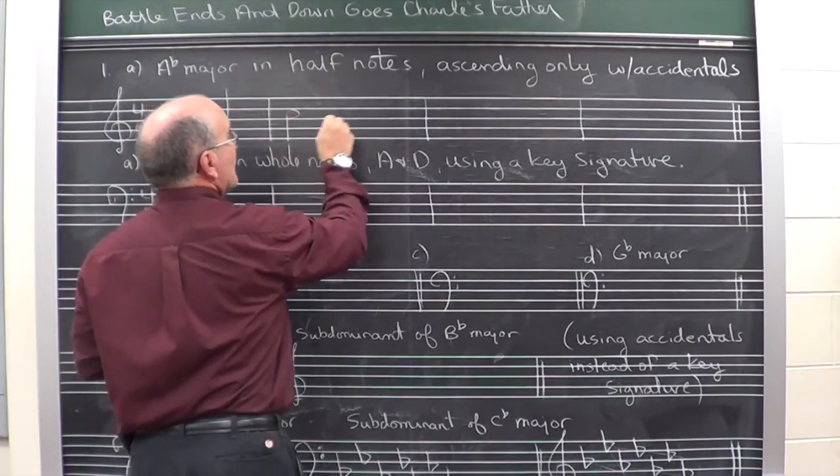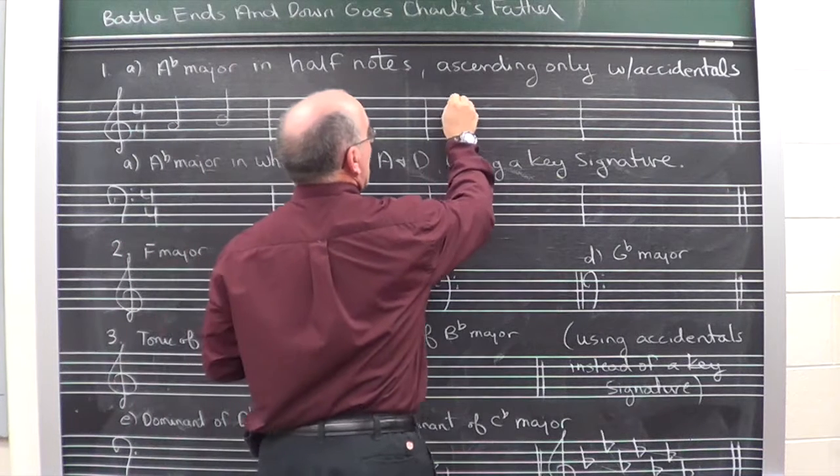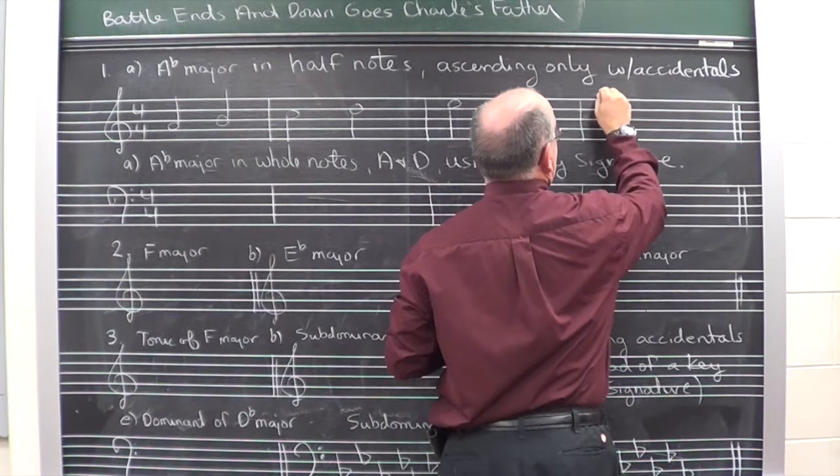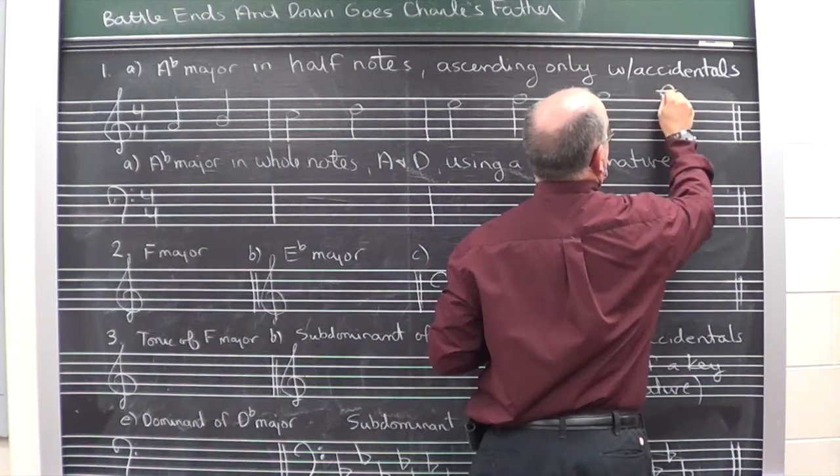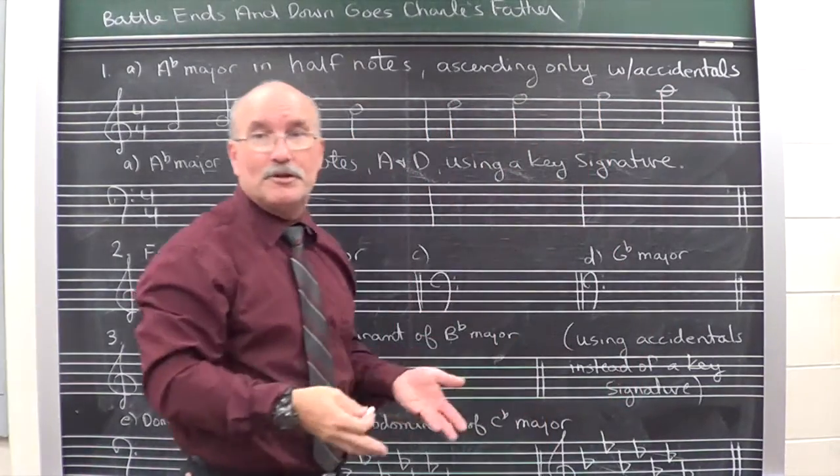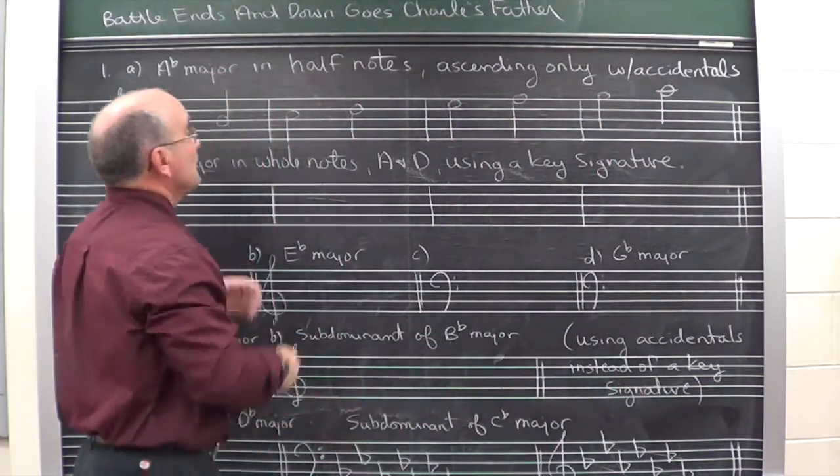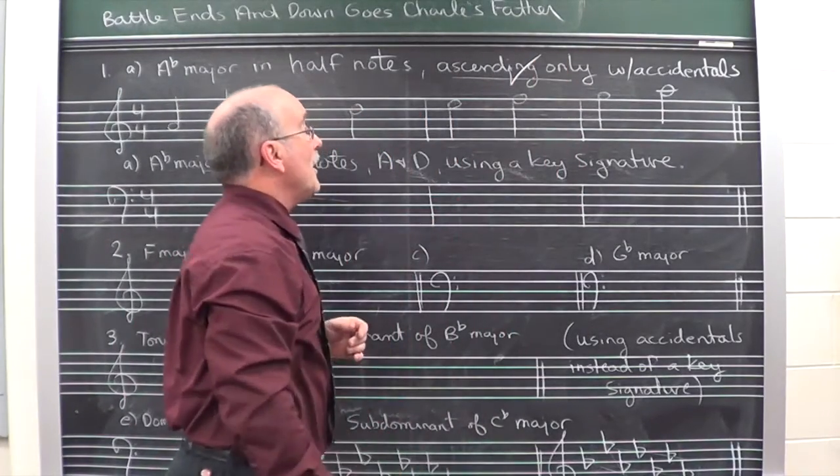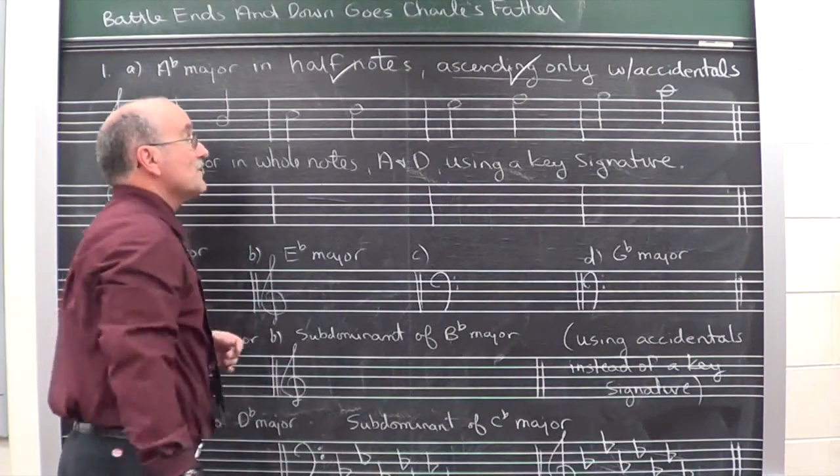So, A, B, C, D, remember they're half notes, E, F, G, and A. It told me to write them in half notes. I wrote them in half notes. It said ascending only, so I wrote it only going up.